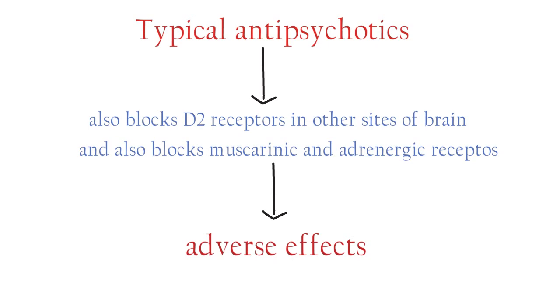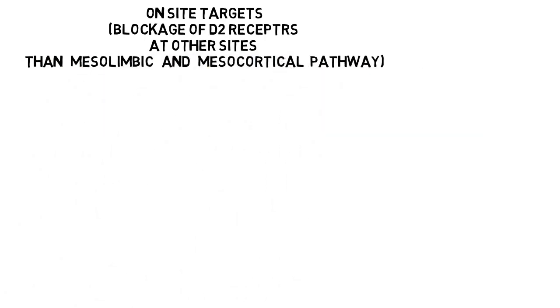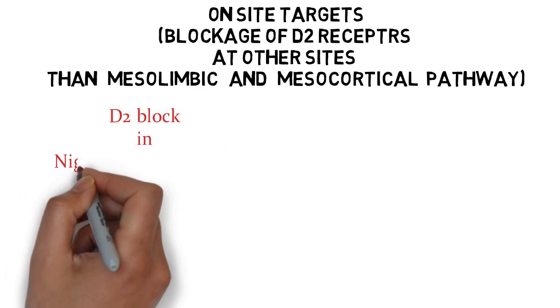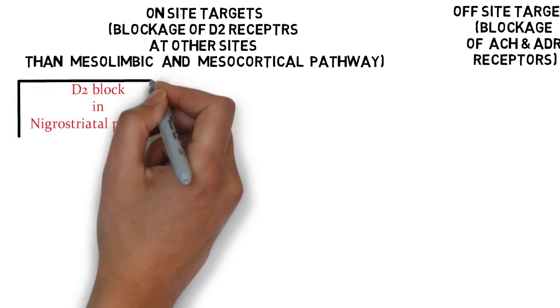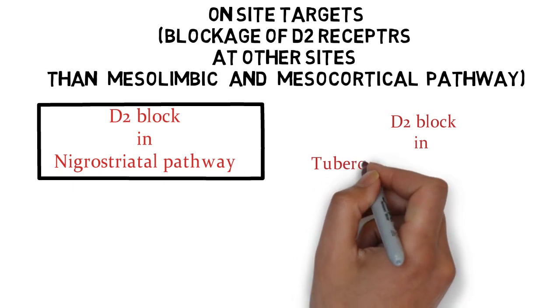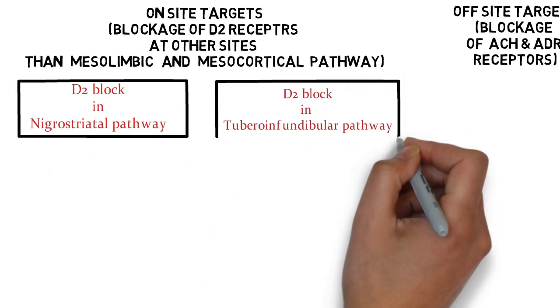The adverse effects of typical antipsychotic agents are divided into two categories: on-site targets and off-site targets. On-site target adverse effects arise from blockage of dopamine D2 receptors, while off-site adverse effects result from blockage of other receptors — namely acetylcholine muscarinic receptors and adrenergic receptors. On-site D2 blockage can occur in the nigrostriatal pathway or in the tuberoinfundibular pathway.